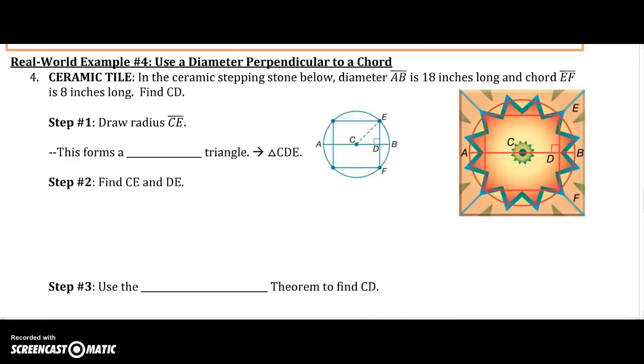All right, a real-world example. In a ceramic stepping stone below, the diameter AB is 18 inches long. So A, D is 18 inches, that is our diameter. And chord E, F is 8 inches long. I want to find C, D, from the center to that chord. So we need to draw our radius C, E.